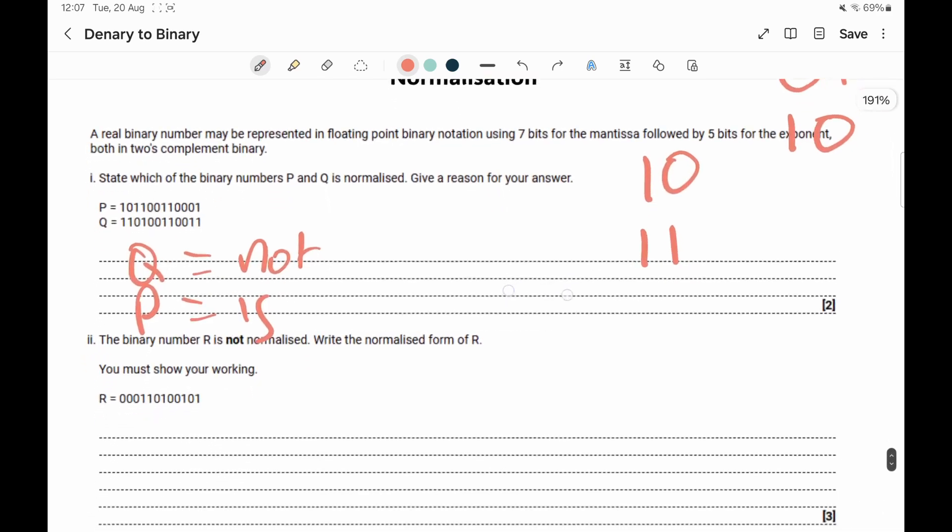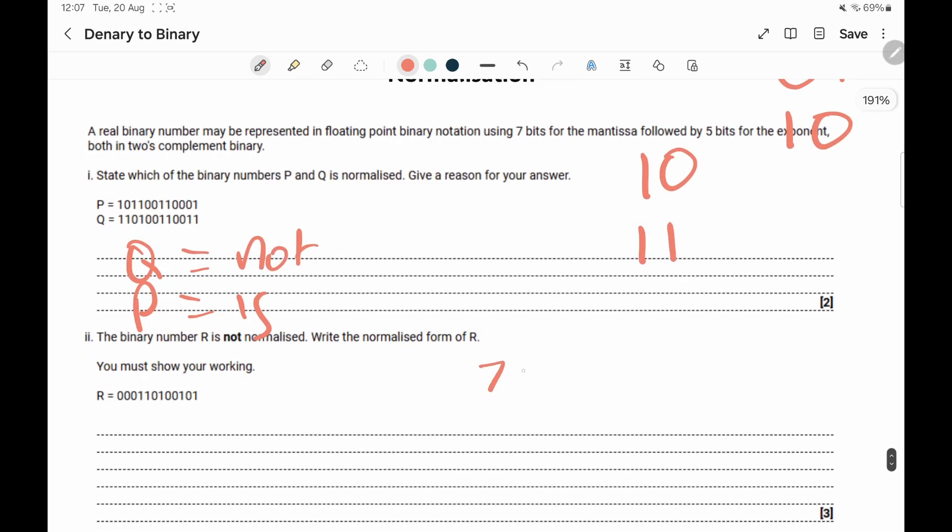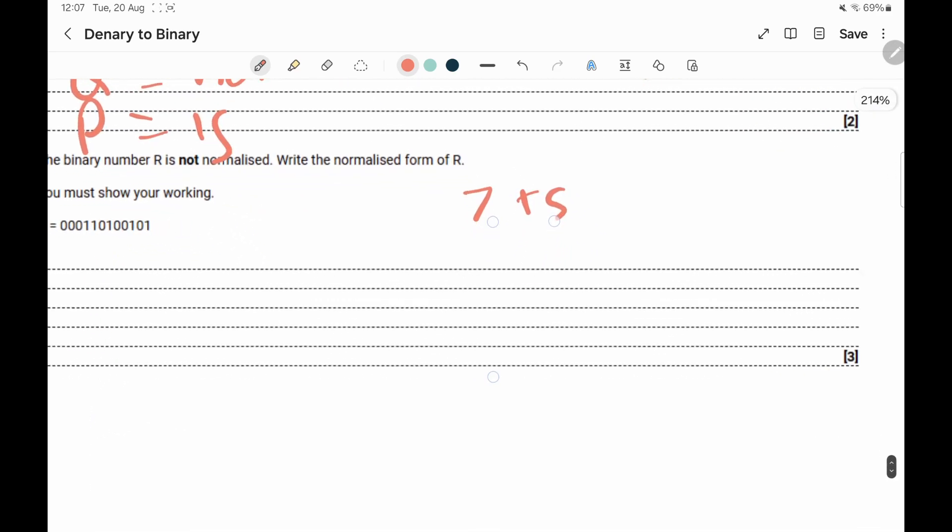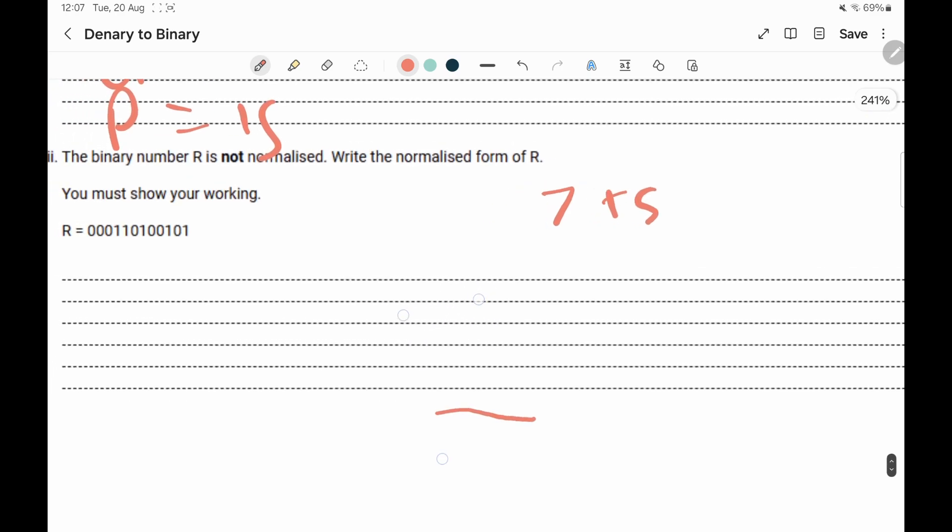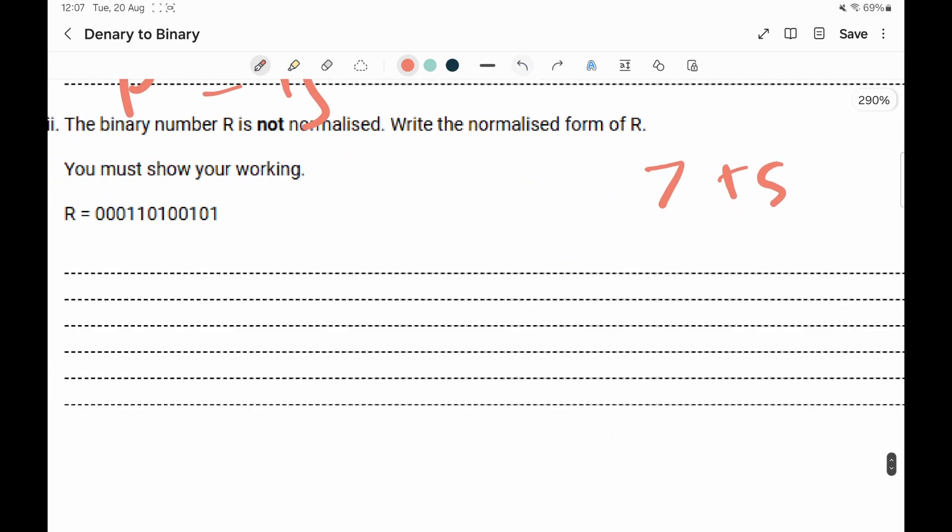So for the second part of the question, let's just check something first, so we've got, so it's 7 and 5, just so we don't have to scroll up, because we need to zoom in a little bit. So there we go, I'm just going to make the pen a slightly bit smaller so we can read it.